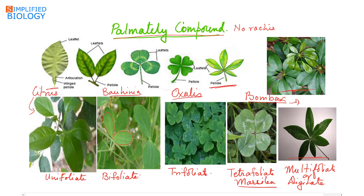To summarize palmately compound leaves: no rachis is present and leaflets are attached to the tip of the petiole. One leaflet — unifoliate (citrus); two leaflets — bifoliate (Bauhinia/kachnar); three leaflets — trifoliate (Oxalis); four leaflets — tetrafoliate (Marsilea); more than four leaflets — multifoliate or digitate (Bombax).